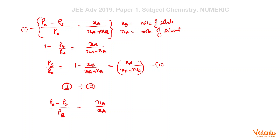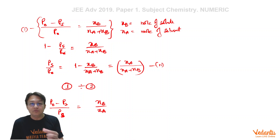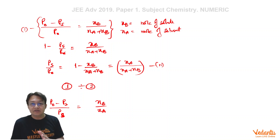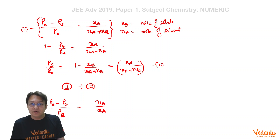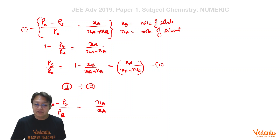It is advisable to use this form — (P0 minus PS) / PS = Nb / Na — because the pressure is decreasing from 650 to 640, which is a considerable change. That means the solute concentration is very large, and therefore (Na plus Nb) cannot be approximated to Na, which is the usual course in solving this problem. In this form, we have taken no approximation, giving a neat and clean equation.